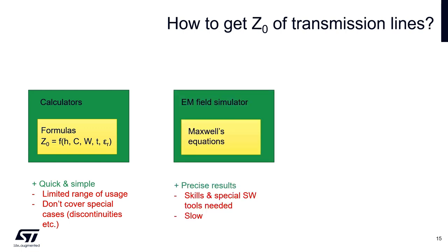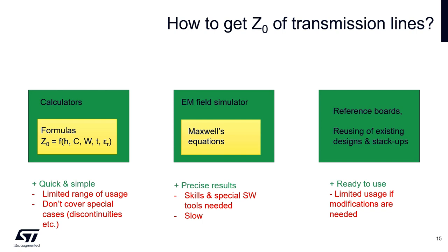In this case, electromagnetic field simulator can give more precise results. Generally it's based on some numerical method of solving Maxwell's equations. A disadvantage of this approach is that the simulation workflow is relatively slow, and specialized software tools are needed. The next option how to apply the characteristic impedance correctly is to reuse the stack-up and layout from reference boards. The disadvantage is limited use, especially when modifications are needed.